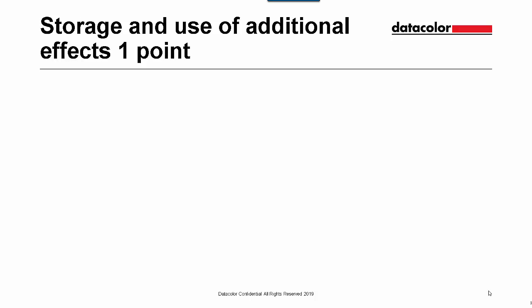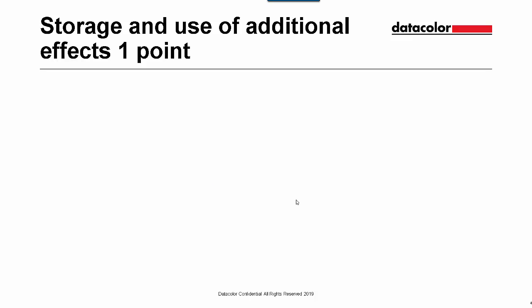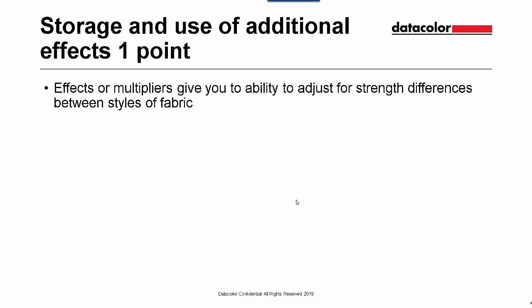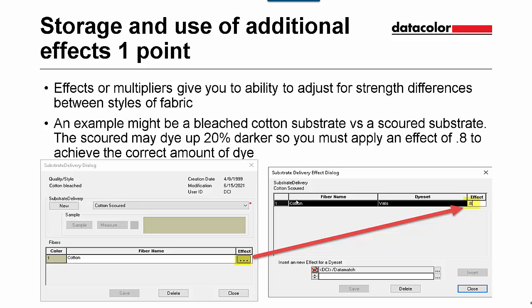Storage and use of additional effects is worth one feature point. On the matching page, you can see the effect we have put in for the cotton scoured substrate and the factor it will apply when matching. So we can see cotton scoured has a 0.8 — it will multiply that when it creates the recipe, creating a recipe that is 20% lighter. The effects or multipliers give you the ability to adjust the strength differences between styles of fabric. An example might be bleached cotton versus a scoured substrate — the scoured may take dye up 20% darker, so you must apply an effect of 0.8 to achieve the correct amount of dye.